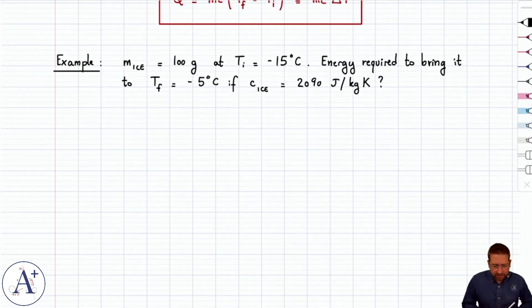So let's have a look at a quick example. We have 100 grams of ice at negative 15 degrees Celsius. And we would like to figure out the energy required to bring it to minus 5 degrees Celsius, given that the specific heat of ice is 2,090 joules per kilogram Kelvin.